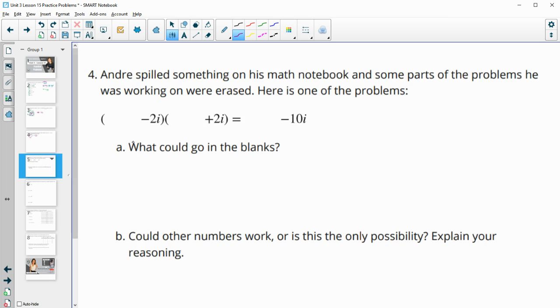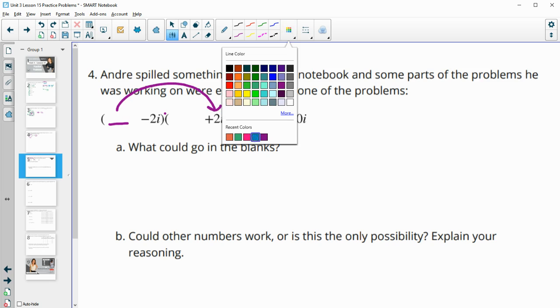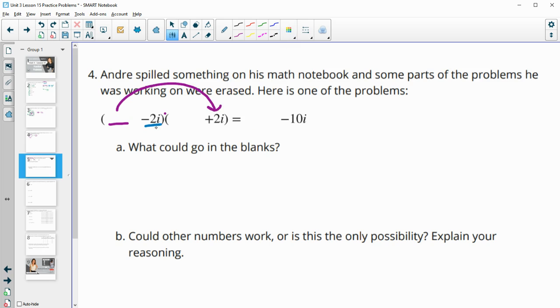Number four, Andre spilled something on his math notebook, and some parts of a problem he is working on were erased. Here's one of the problems. What numbers could go in the blanks? So we're multiplying here. So we know that we're going to take this number and multiply it by this. And then we're going to end up taking this number and multiplying it here. That's going to give us this.